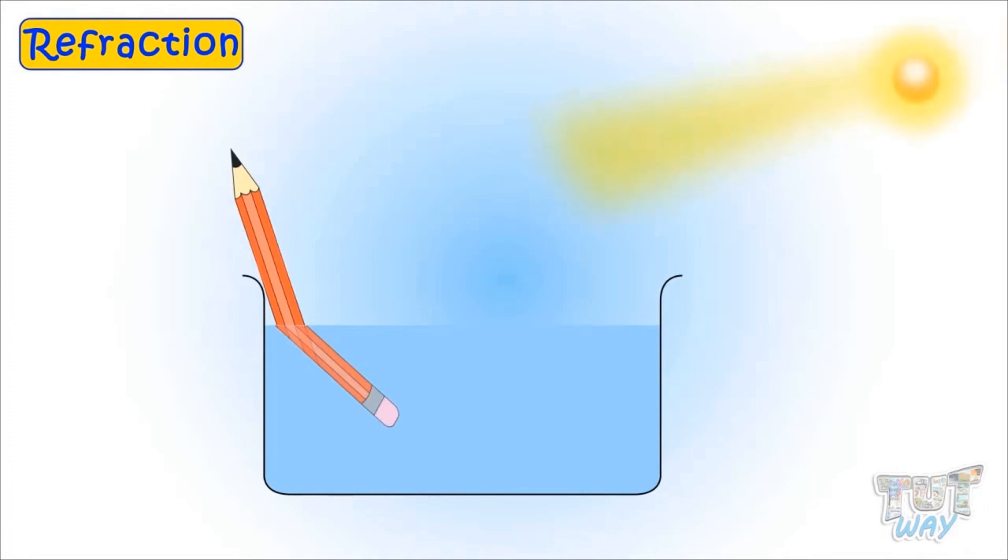We see everything because light falling on it gets reflected back to our eyes. But in the case of this pencil, the light falling on the half of the pencil which is not in the water is directly getting reflected back to our eyes without any bending. So we see that pencil straight.